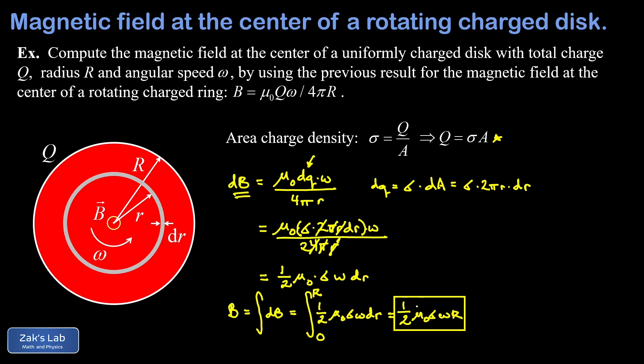But in this problem, we were given the total charge on the disk rather than the area charge density sigma. So we should go ahead and substitute for sigma. So going back to the definition of area charge density, the area charge density is the total charge divided by the total area of this disk. In other words, that's going to be Q divided by pi big R squared.